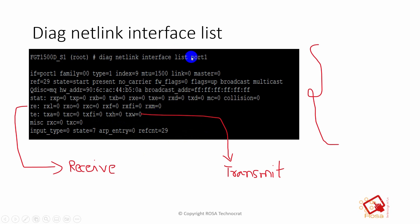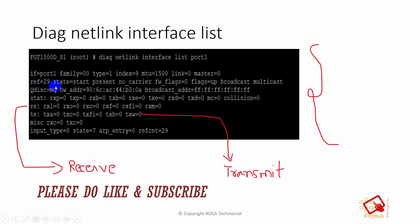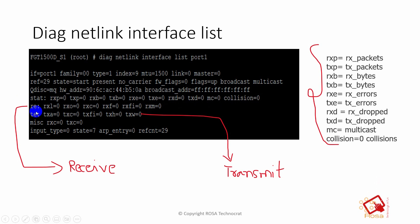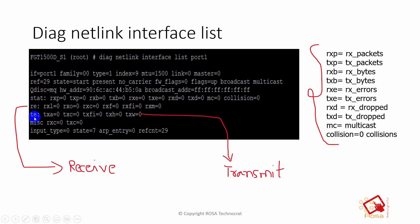The next command is 'diag netlink interface list,' which goes deeper than the physical command — it gives all the counters related to the interface. Running 'diag netlink interface list port1' shows the port number, family type, interface type (ethernet or fiber), index, MTU, and all interface statistics: rxp, txp, rxb, txb. There are also counters specifically for receive errors (re) and transmit errors (te).